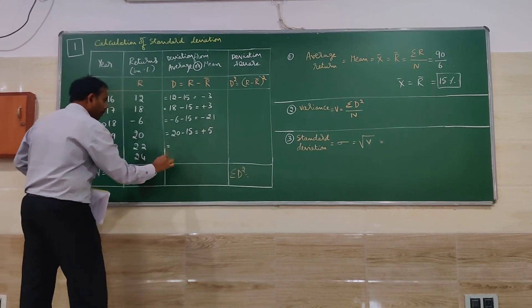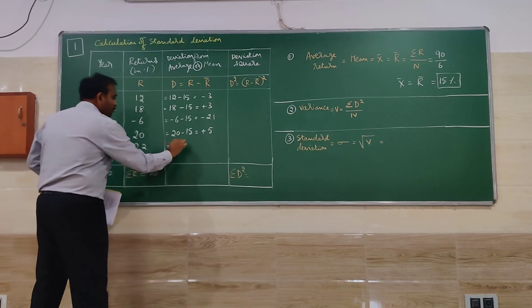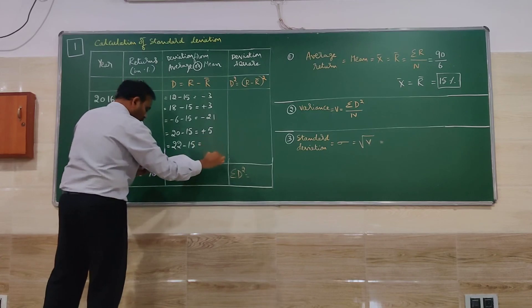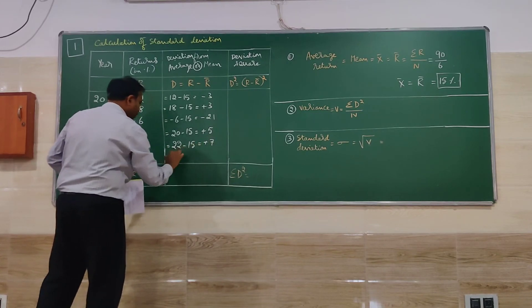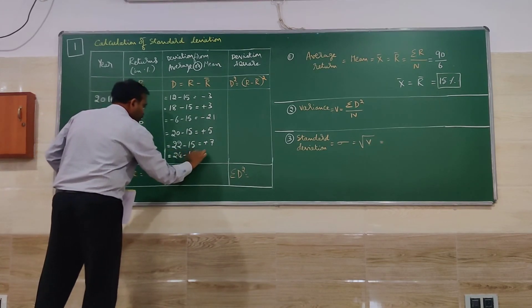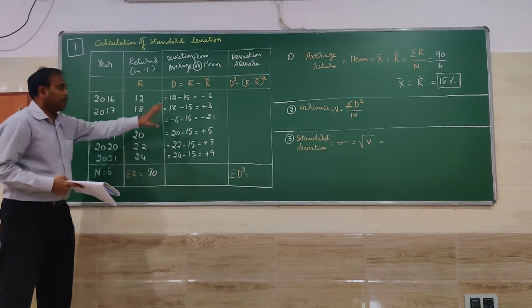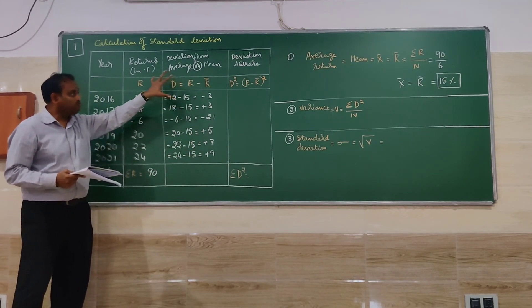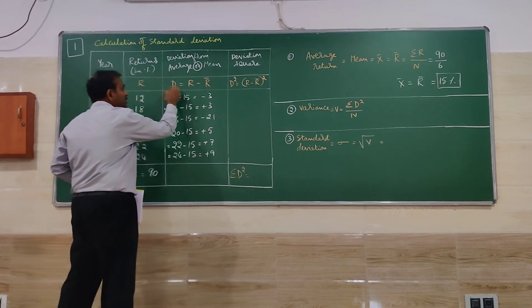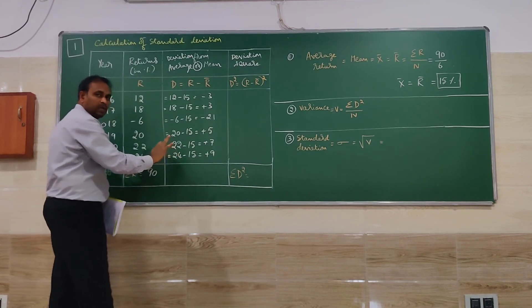Next for 2020 we have 22. R bar is 15. So it is going to be plus 7. Next for 2021: 24 minus 15. It is going to be plus 9. So plus and minus values to be indicated in deviation. And the deviation is done. No need to total deviation. No need of it, it is of no use.